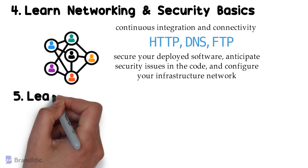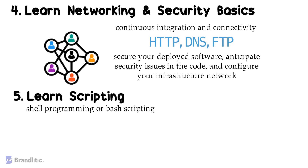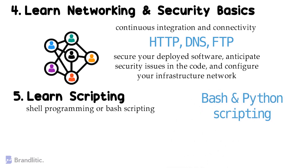Step 5: Learn scripting. Shell programming or Bash scripting is required as a skill to become a DevOps engineer. You can focus on both Bash and Python scripting, which widely helps in automation. Scripts are very useful — you can easily develop a script to initialize something during the system's boot-up process, and as a result, a lot of manual work can be eradicated.